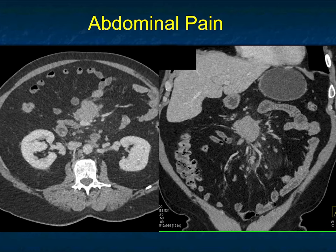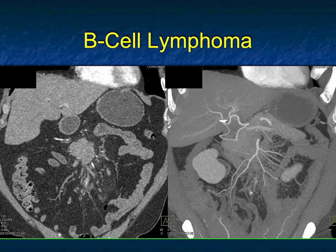That doesn't exclude carcinoid or a desmoplastic reaction. Most things can give you some desmoplastic reaction, but carcinoid gives the most impressive — and I'm not seeing that here. I'm seeing some haziness in the mesentery and additional nodes. It could be Castleman's disease — a well-defined enhancing mass — but that doesn't explain the additional adenopathy. You also need to think about lymphoma. Lymphoma can occur as big or small masses, and in some cases you see the so-called sandwich sign with vessels and bowel.